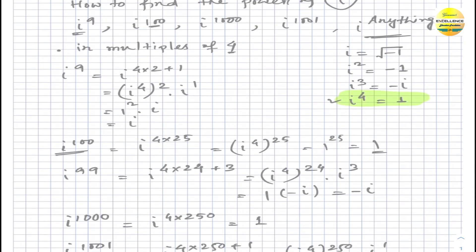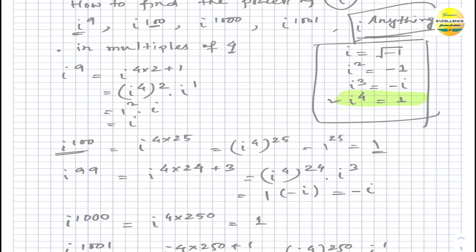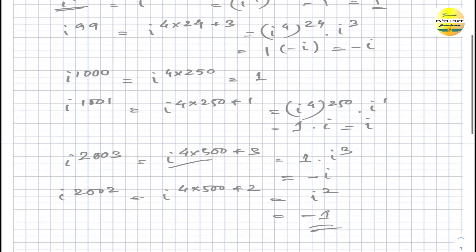In this way we can find the powers of i. We just need to remember the basic values — i, i squared, i cubed, and i to the power four — and then convert the exponent into multiples of four, because i to the power four gives us one, and one to the power anything will give us one only.